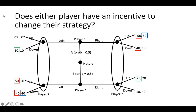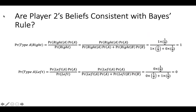Given player 1's strategy, player 2 also has no incentive to change their strategy. Given their beliefs, player 2 will make 10 instead of 50 if they play down when they observe player 1 playing right. Similarly, if player 2 observes player 1 playing left and believes them to be a type B player, playing up instead of down yields 20 instead of 40. The last thing to check is whether player 2's beliefs are consistent with Bayes' rule. To check this, we need to use the equation for Bayes' rule combined with player 1's strategy.